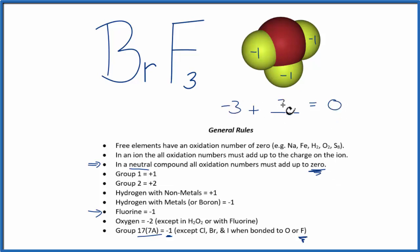Minus three and plus three, that would give us zero. So this bromine here has an oxidation number of plus three.